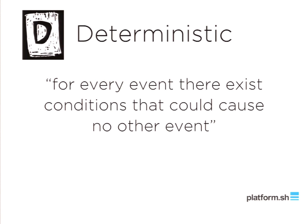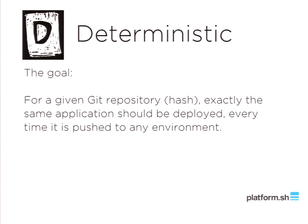Let's move on to Deterministic — the D in OCD deployment. It means for every event there exists conditions that could cause no other event. When you deploy in an OCD deployment, you know it's going to work the same way every time. There's only one outcome.